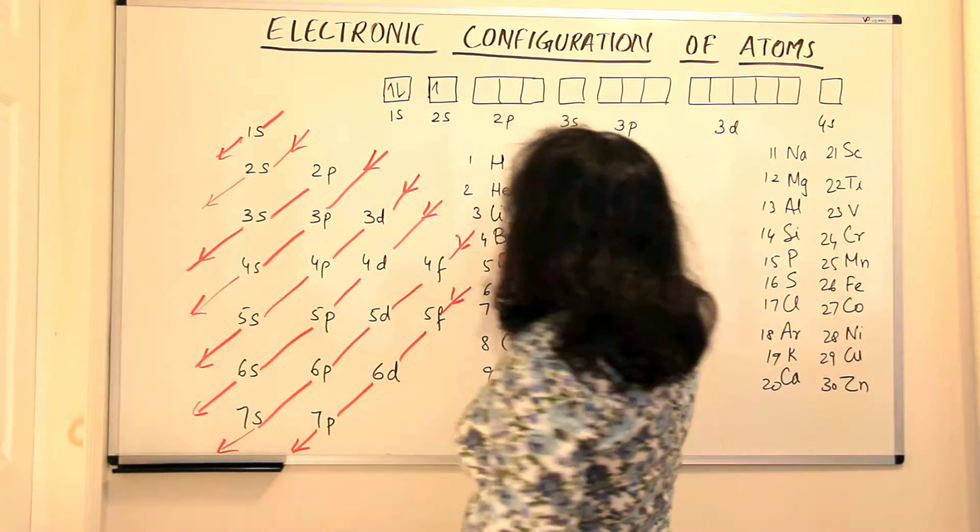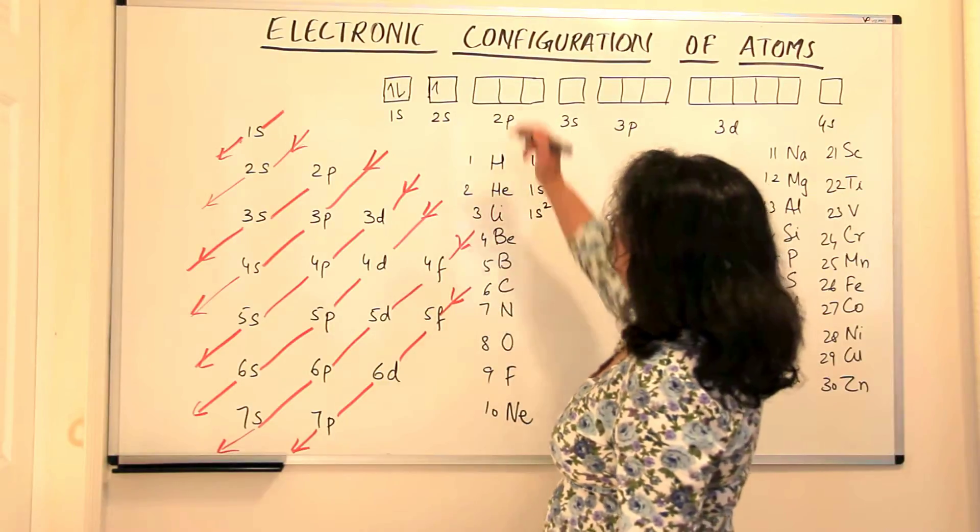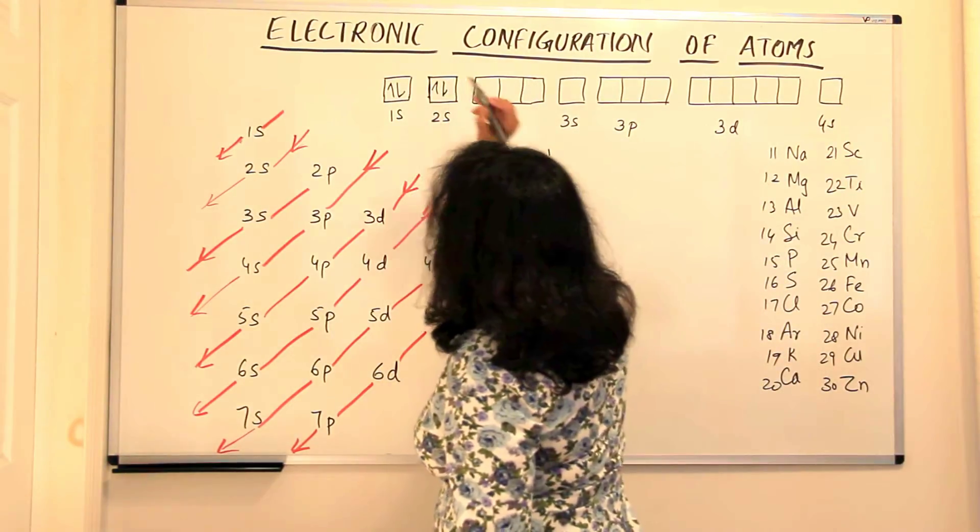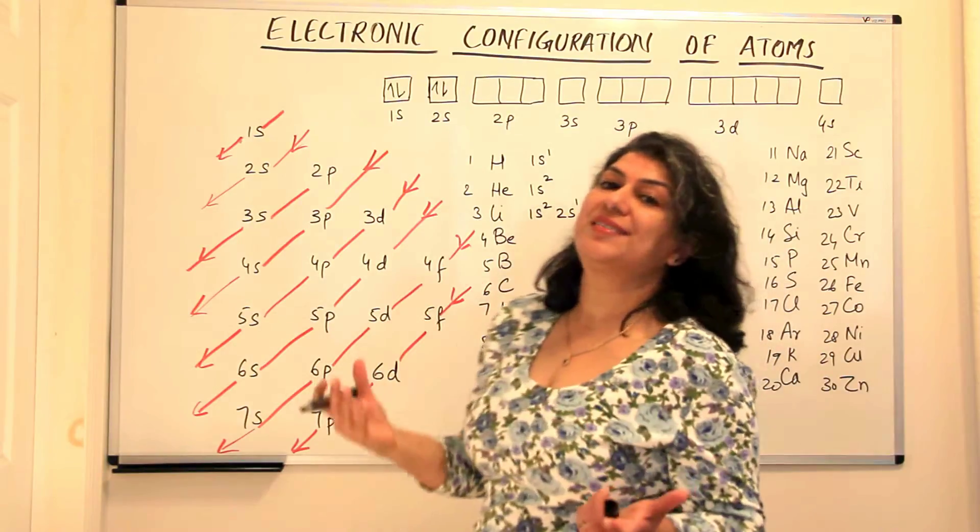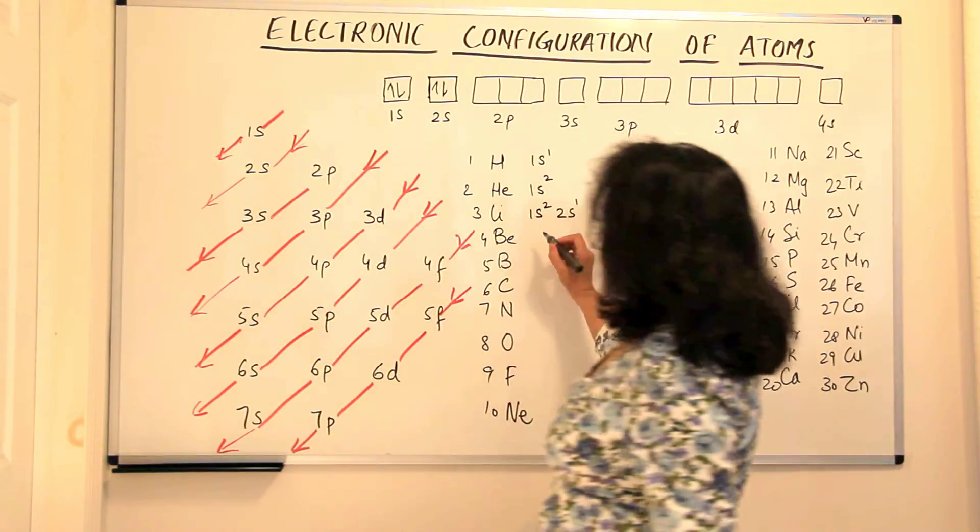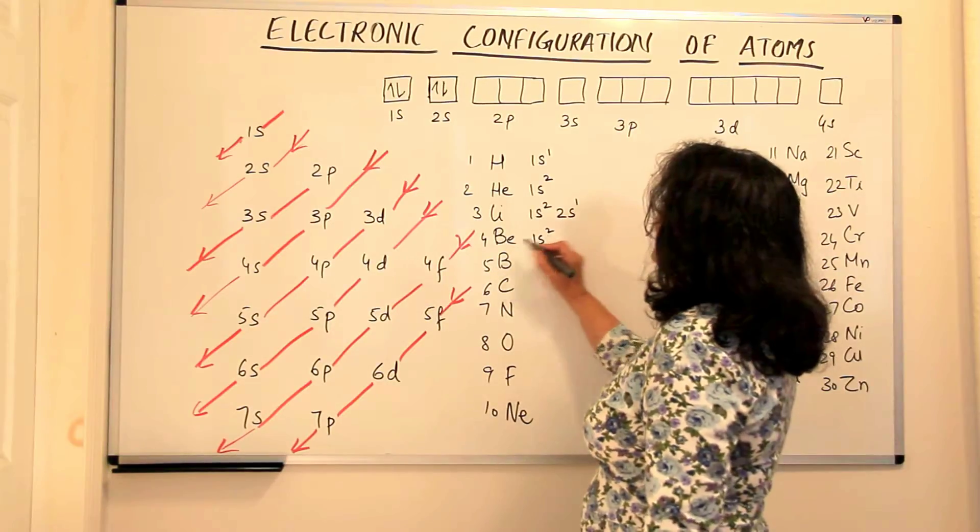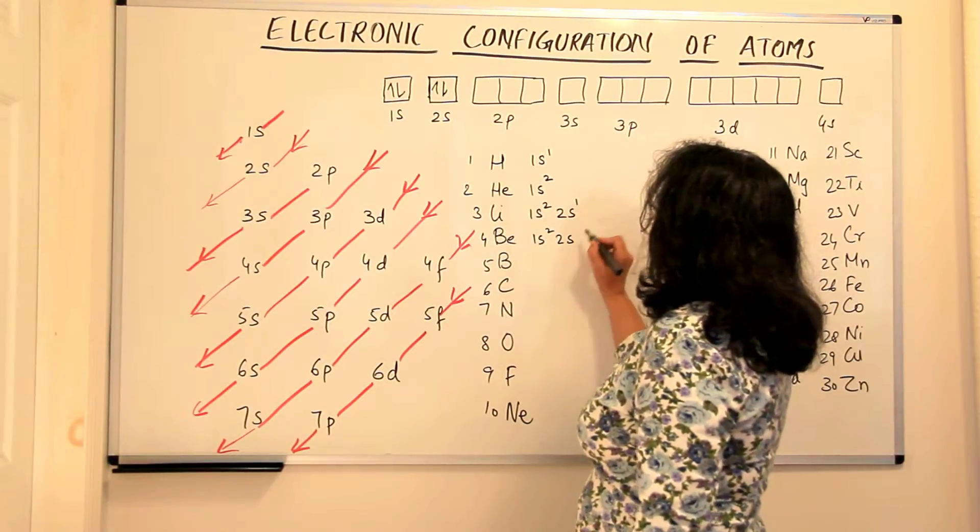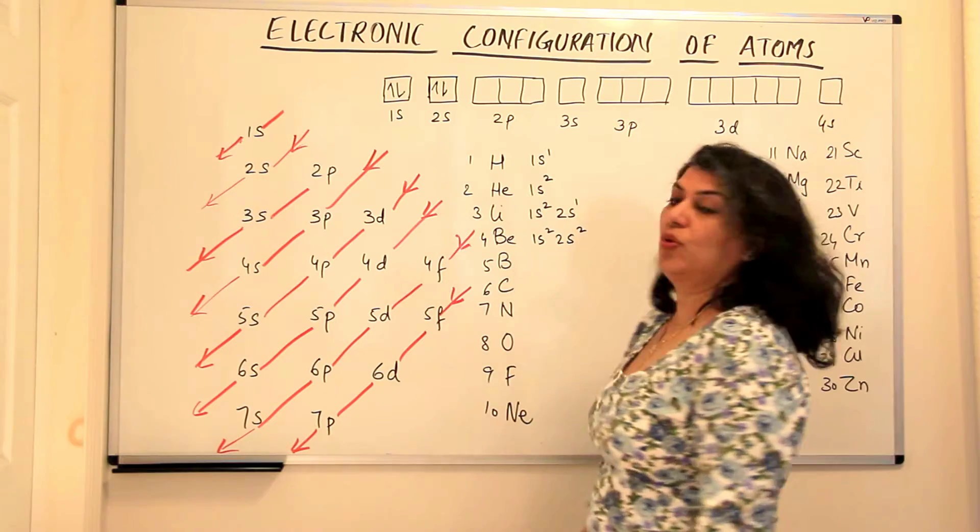Next comes beryllium. Beryllium has four electrons. So the fourth electron goes to the 2s orbital and it pairs up there. So what will the configuration be? We will write 1s has two electrons in beryllium and the next two electrons go to 2s orbital. Therefore, 2s is also 2.